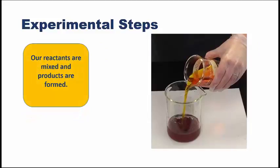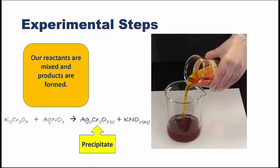When our reaction is complete, we are left with a mixture containing the solid silver dichromate product and an aqueous solution of potassium nitrate. The solid that's formed by mixing aqueous solutions is called a precipitate. To isolate the solid product, we're going to have to use a separation technique.